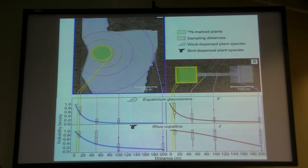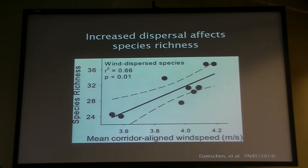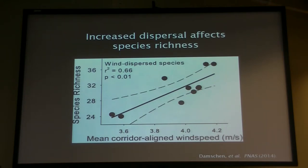I wanted to connect these results, especially for wind-dispersed species, to what we observe at the level of communities — one attempt to connect wind to species diversity. This is from Ellen Damschen's work published last year, where we developed a measure of wind speed aligned along the corridor on the x-axis and related that to species richness. What we find is that more wind blowing along the direction of the corridor seems to be related to the number of species in connected fragments, linking the mechanism of increased dispersal of wind-dispersed species through corridors to potential consequences for plant communities.